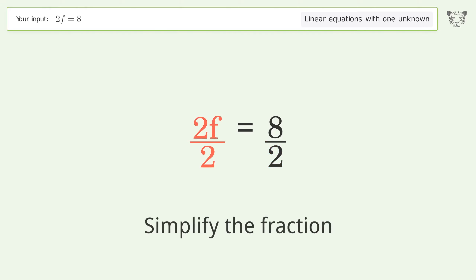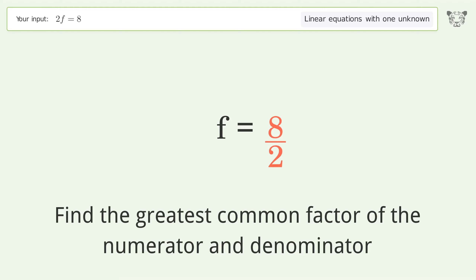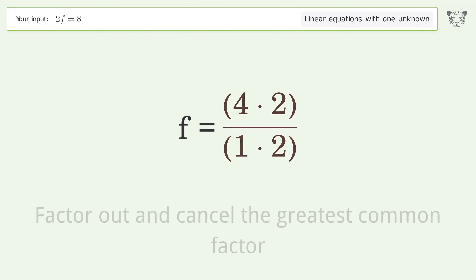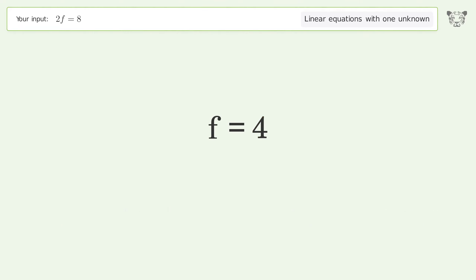Simplify the fraction by finding the greatest common factor of the numerator and denominator. Factor out and cancel the greatest common factor. The final result is f equals 4.